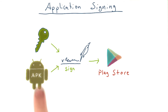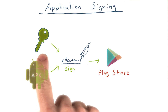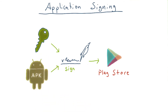In order to sign an app, we first need to generate a key. This key will be unique to you and should be used to sign all of your apps. We will also create a key store, which is just a special type of database that we keep our key in. Android Studio makes creating key stores and generating keys incredibly simple. Let's take a look at how this is done.